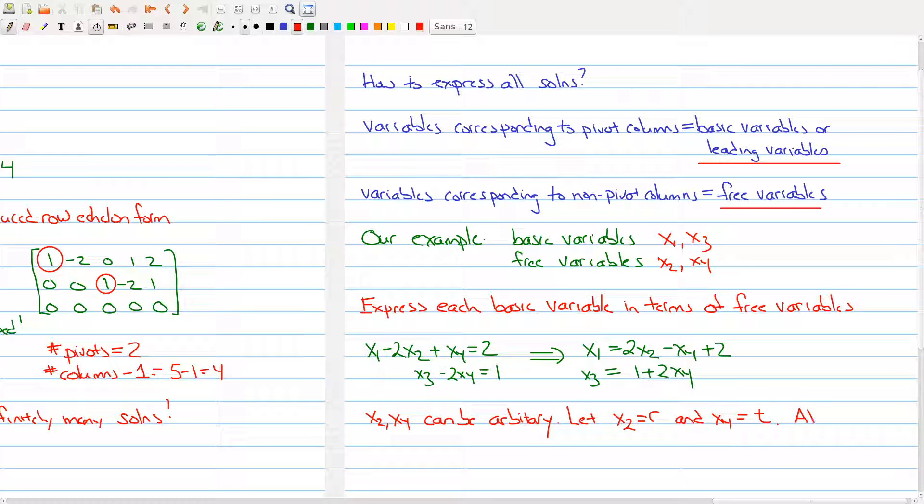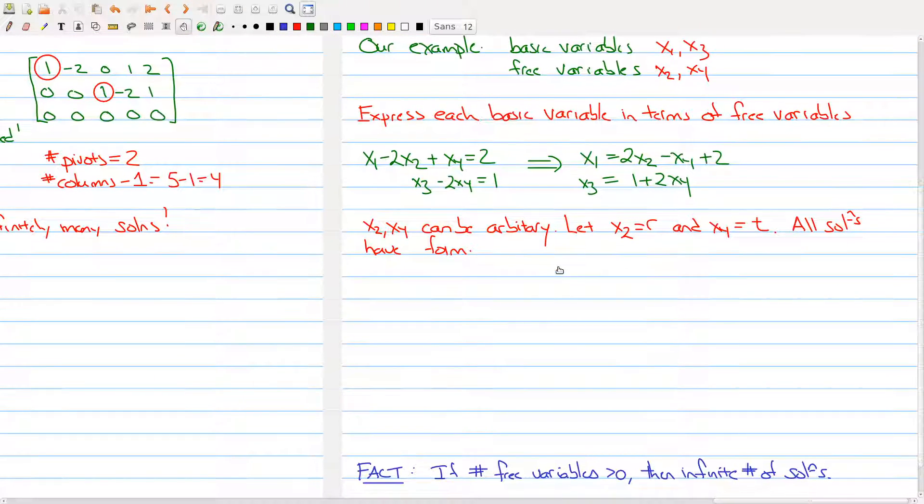And then what we can say is that all solutions have the form, and I'll just move my screen up here. And I'll write it out. We have that x1 is going to be 2r minus t plus 2, x2 is going to be r, x3 will be 1 plus 2t, and x4 will be t.